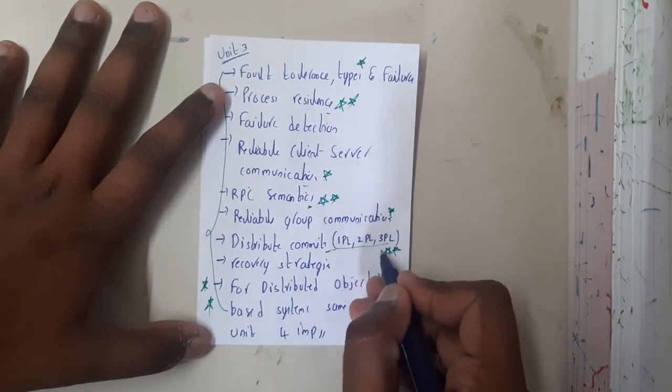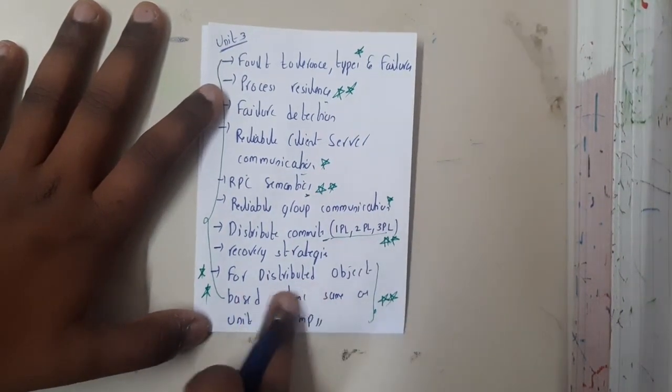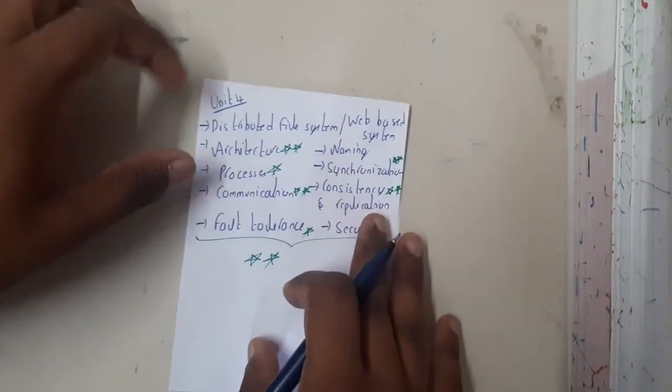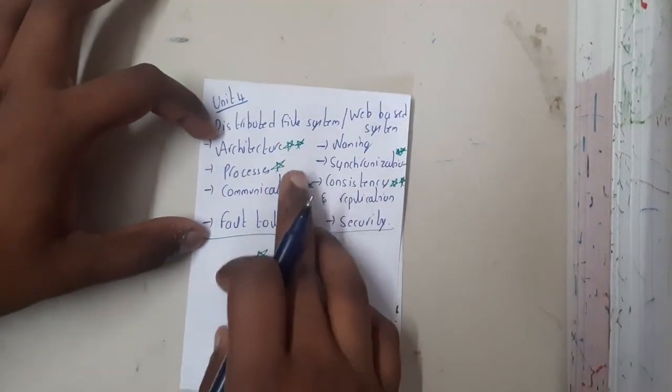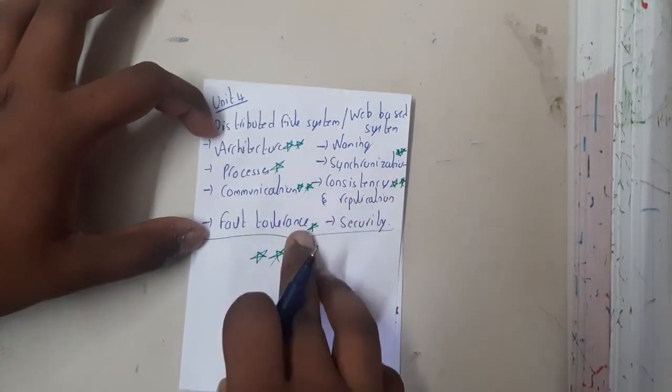1PL and 2PL and 3PL. And for distributed object-based system, please follow the same important topics of fourth unit. It's architecture, process communication, and fault tolerance. Just go through it.